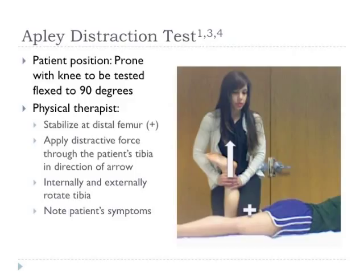For the Apley distraction test, the patient is in the same position — prone with the knee to be tested flexed to 90 degrees. The physical therapist stabilizes the patient's distal femur with their own knee and provides a distractive force using both hands grasped just proximally to the patient's malleoli. Maintaining this distractive force, alternate between internal and external rotation of the tibia and note the patient's symptoms. Compared to the compression test, the distraction test examines the integrity of the collateral ligaments, placing a distractive and rotational force at the tibiofemoral joint, making the collateral ligaments taut and potentially highlighting their involvement if injured.